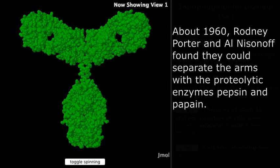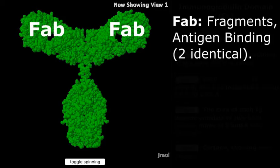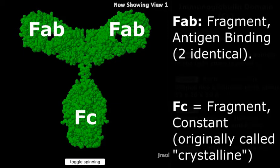Even after separation, two of the arms could still bind to antigen. These were called the antigen binding fragments, or fragment antigen binding, or FAB for short. These FAB fragments could not easily be crystallized, but the third fragment was easily crystallized, so it was called the crystalline fragment, or FC for short.